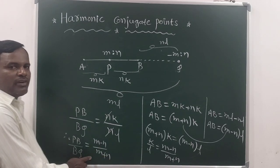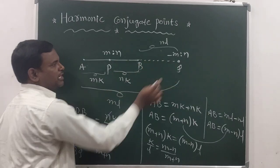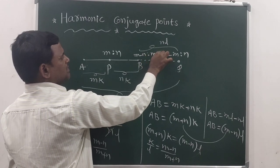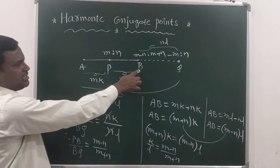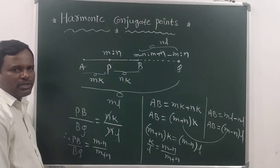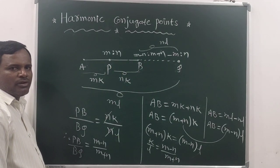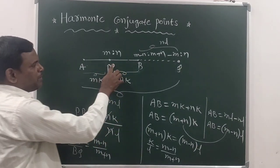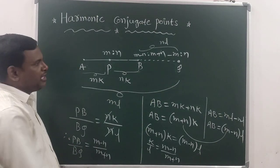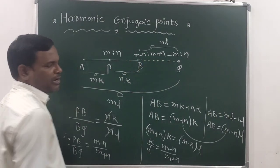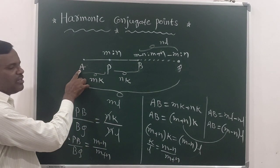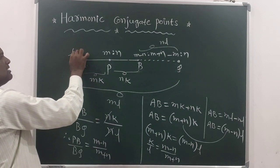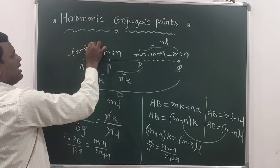So we can say that B divides PQ in the ratio M minus N to M plus N. Since B is in the interior portion of PQ, and A and B are harmonic conjugate points with respect to PQ, A must divide PQ in the ratio minus M minus N to M plus N.